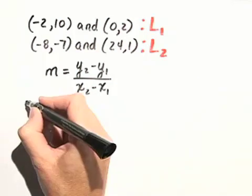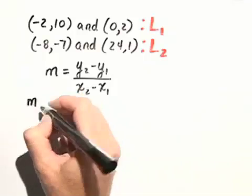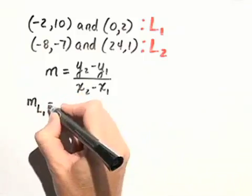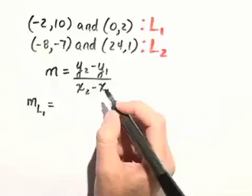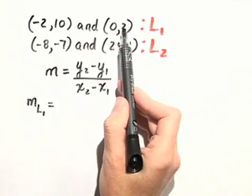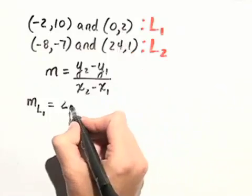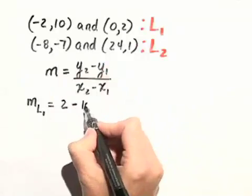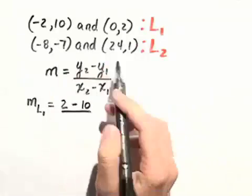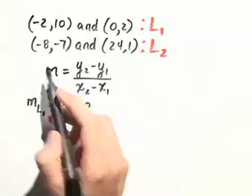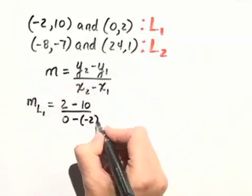So let's call the slope of line 1, m sub L1. That's equal to the difference of the y-coordinates, so we have y sub 2 is 2 minus y sub 1 is 10, over x sub 2 is 0 minus x sub 1 is negative 2.